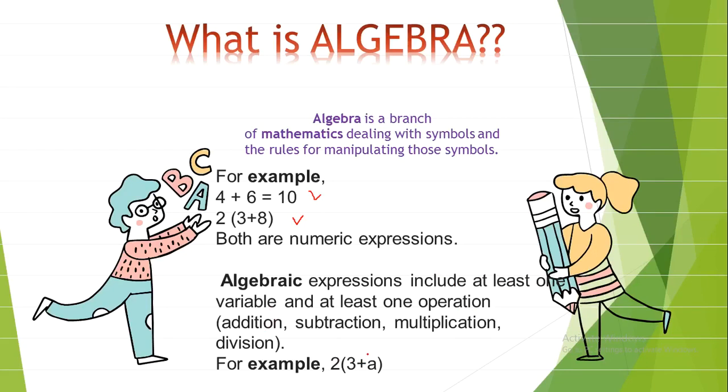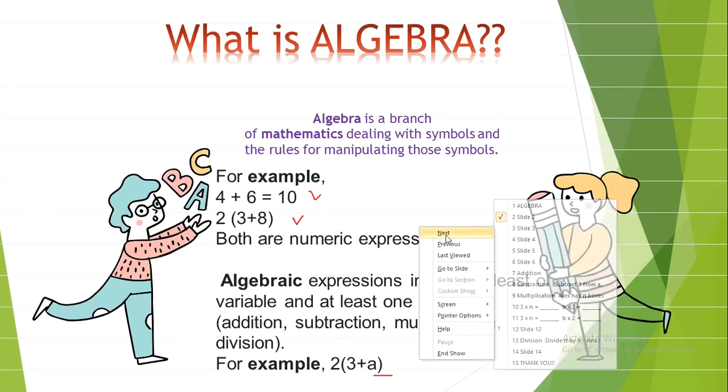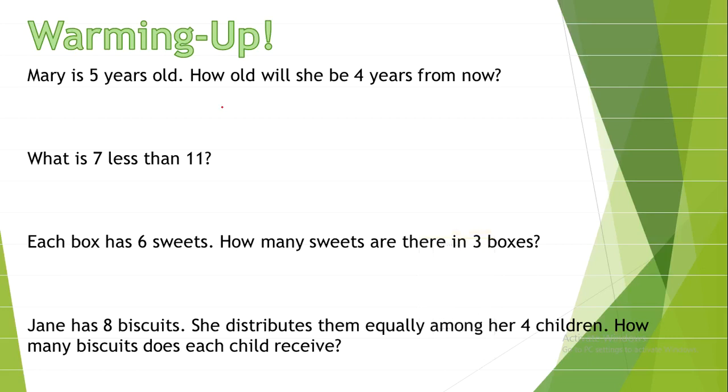For example, Mary is 5 years old. How old will she be 4 years from now? So, 5 plus 4 equals 9 years old.